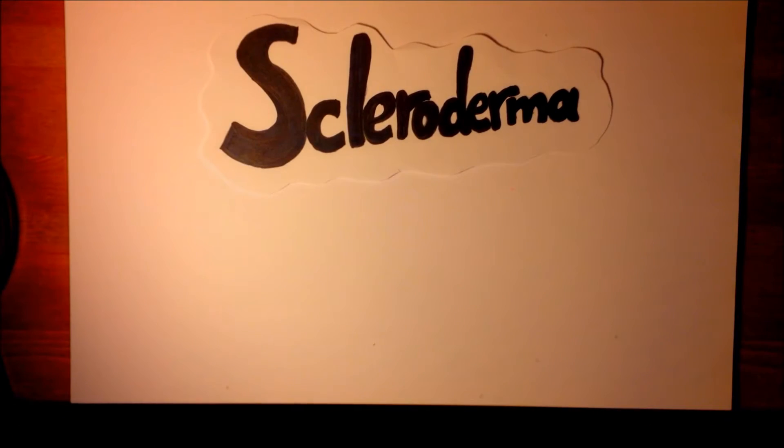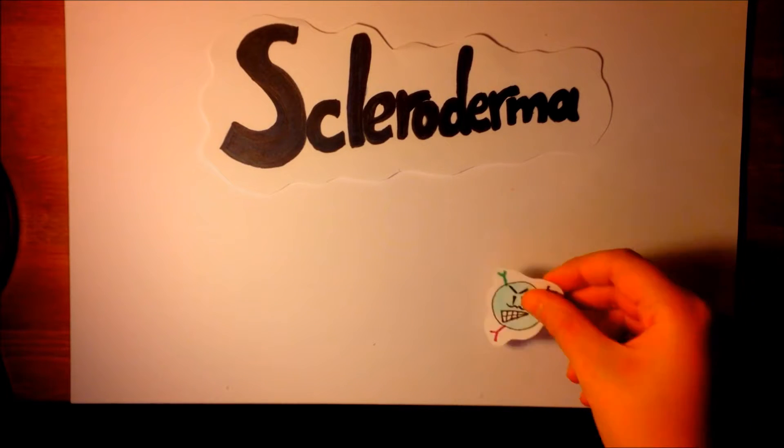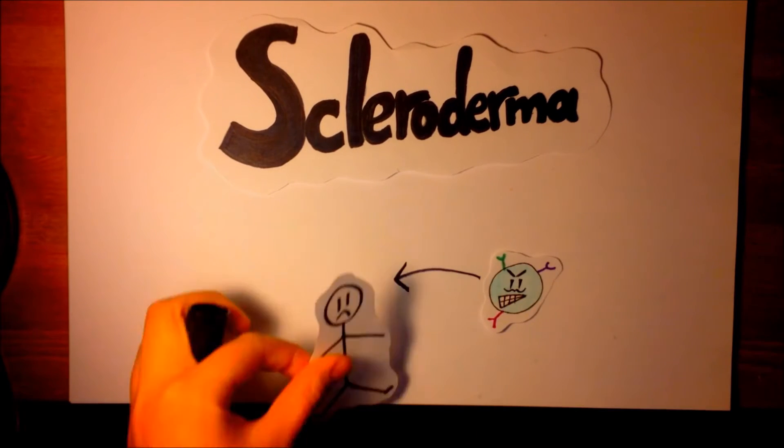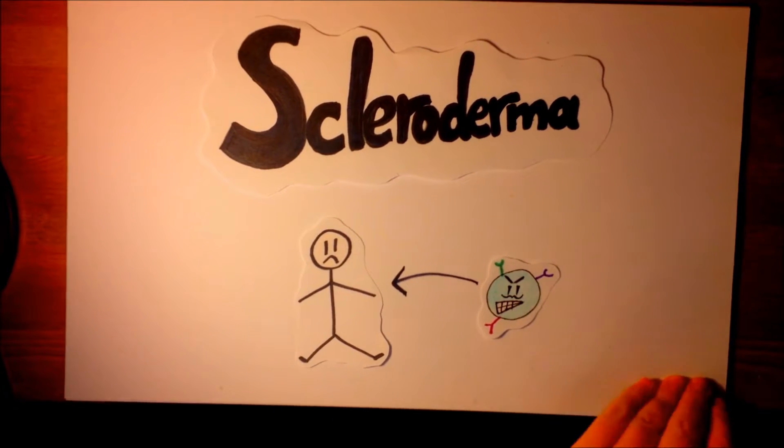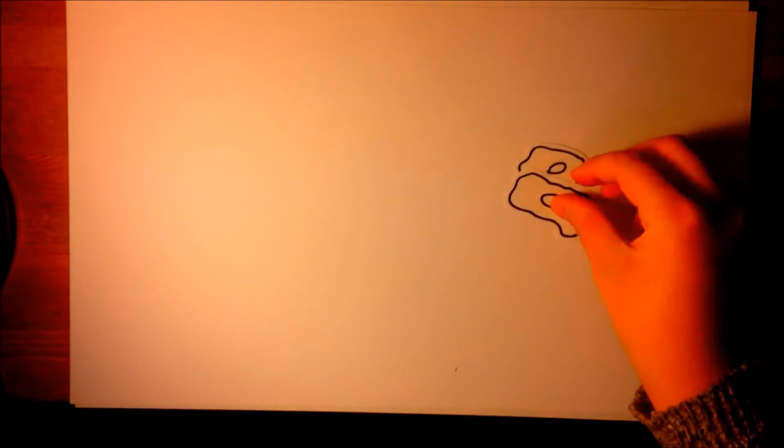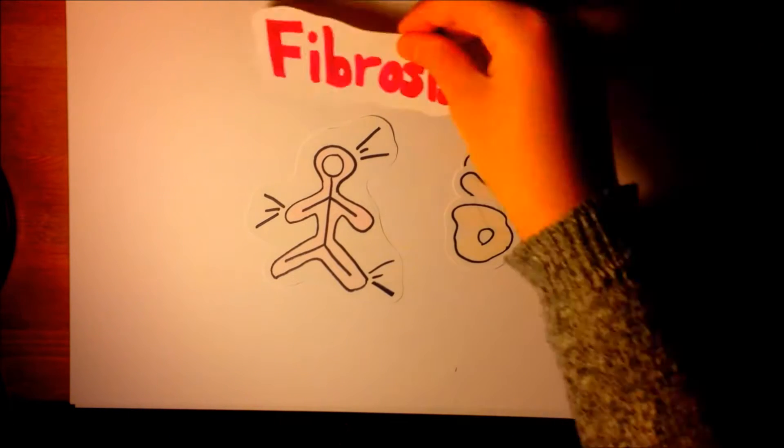Scleroderma or systemic sclerosis is a rare autoimmune disease where the immune system starts attacking the body's tissue for an unknown reason. This condition causes thickening and scarring of the tissues in an organ. This is known as fibrosis.